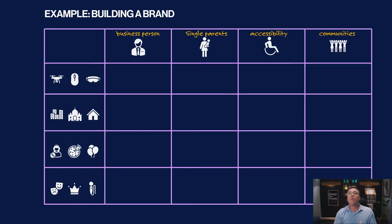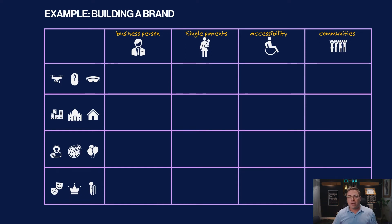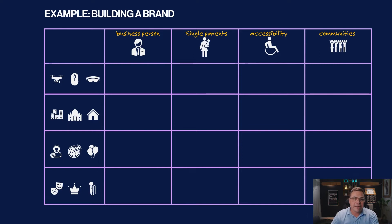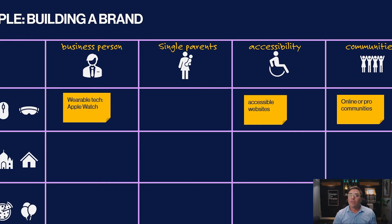Let's take, for example, building a brand. We're looking across business people, maybe single parents, some accessibility concerns, and all-up communities. This is just a lightweight example — there could be lots more people categories. What we want to do is think about ideas that intersect between the people and the enablers. If I look at technology for business people — they're on the go, they're fast-paced — maybe using the Apple Watch is a great way to boost our brand or make our brand presence known.